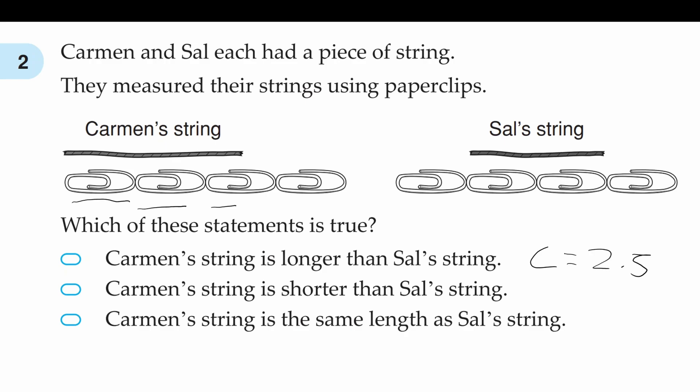Now how many paperclips long is Sal's string? One, two. So S, which is short for Sal, is equal to two. Which means that Carmen's string is longer than Sal's string.